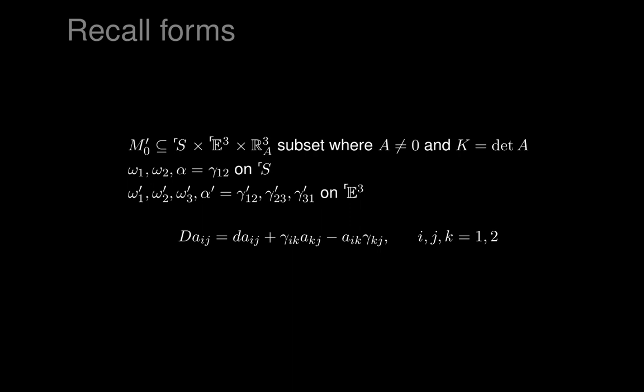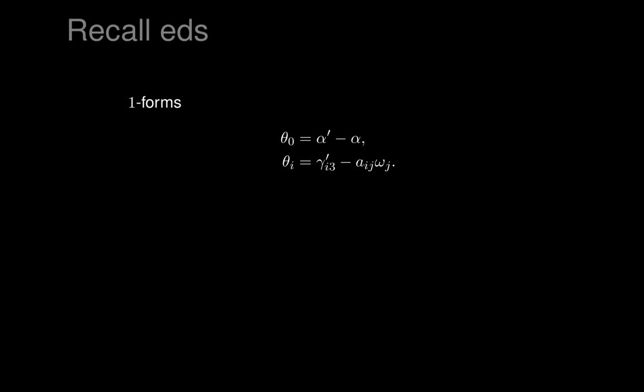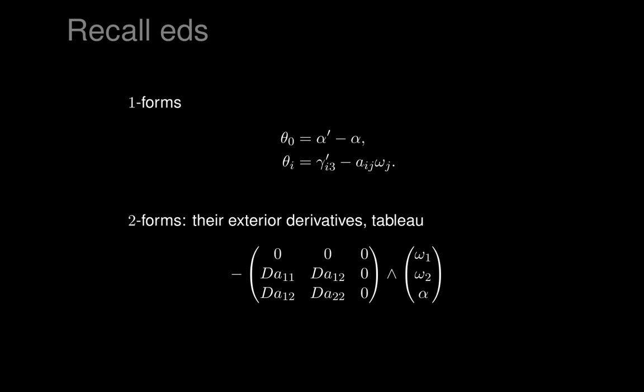We want to write down the exterior differential system on M'₀ in terms of these forms. The EDS had a one-form θ₀ = α' − α, whose vanishing forces the connection forms to match. That was found to be forced on us by trying to make the soldering forms vanish. We also have to include that γ_i3' = A_ij ω_j, which forces the shape operator of the immersion to match the potential shape operator A_ij. Taking exterior derivatives of θ₀ and the θ_i's gives exactly the tableau.